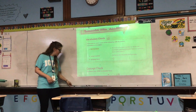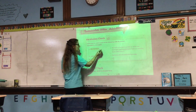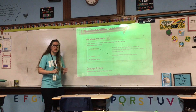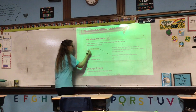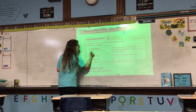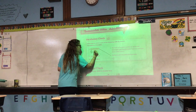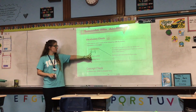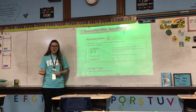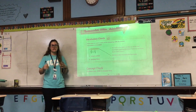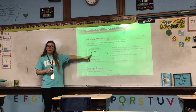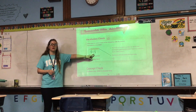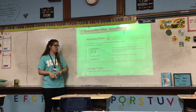We know that like fractions are fractions with the same denominator. For example, 3 fourths and 1 fourth are like fractions because they both have a denominator of 4. Like fractions show part of the same whole. They are not equivalent because 3 fourths is a lot more than 1 fourth, but they show part of the same whole.